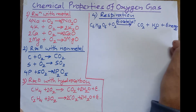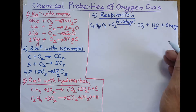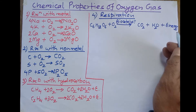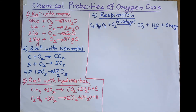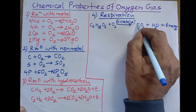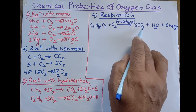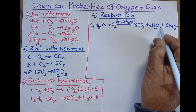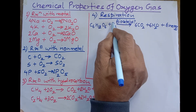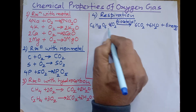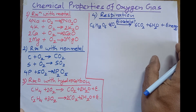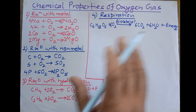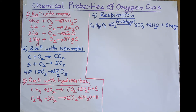In the process of respiration, we get energy which is utilized for different physical activities of animals, and it also occurs in plants. Balancing the equation: carbon is 6, so we place 6 before CO₂; hydrogen is 12, so we place 6 before H₂O; this requires 6 molecules of O₂. This balanced chemical equation represents the respiration process.